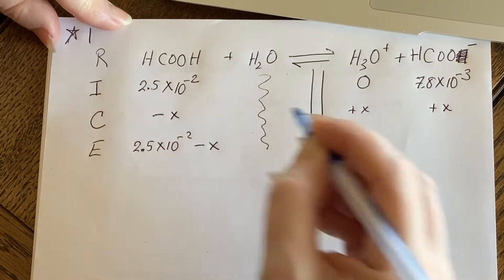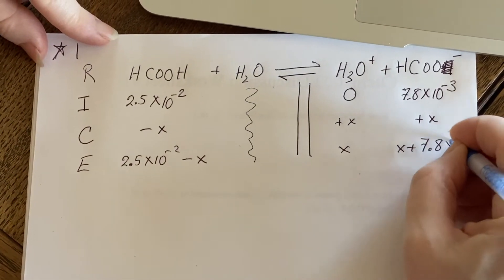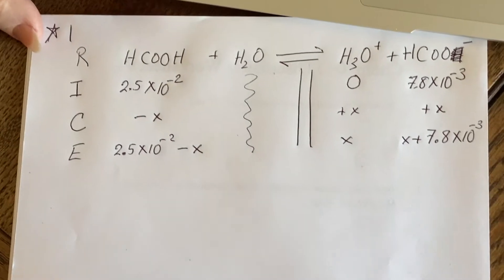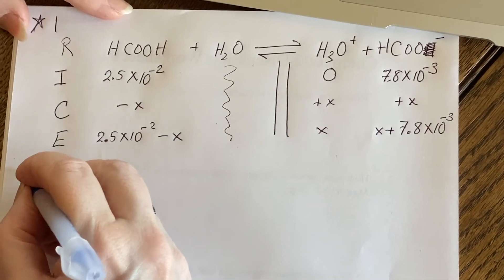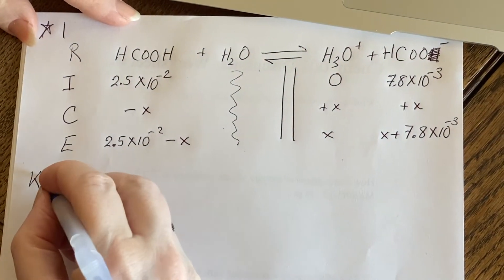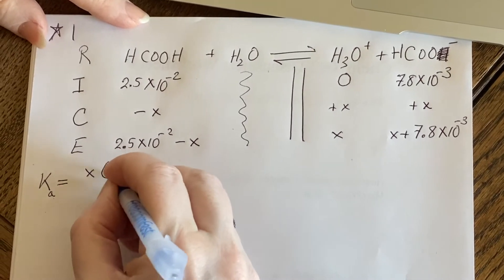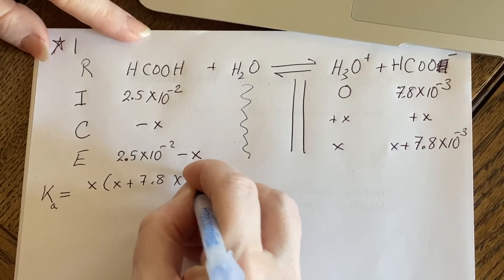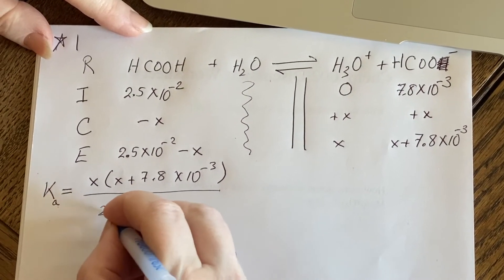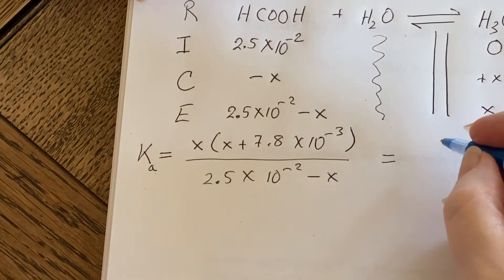And then for the equilibrium, we see that things have gotten particularly nasty. We have this minus X, this is just X, but oh my goodness, this is worse than usual. Now it's still just going to end up being your quadratic equation. For this, the KEQ is the same as the KA because it's an acid. So we'll take the X times the X plus 7.8 times 10 to the negative third, because there's your products, over your reactant. And we'll set it equal to the KA that we were given.